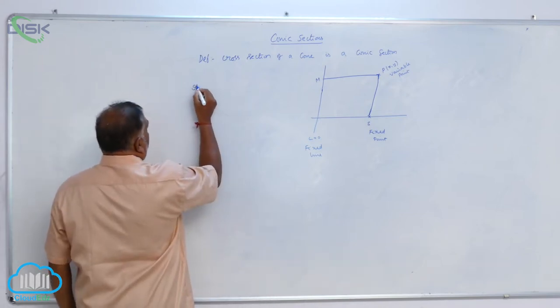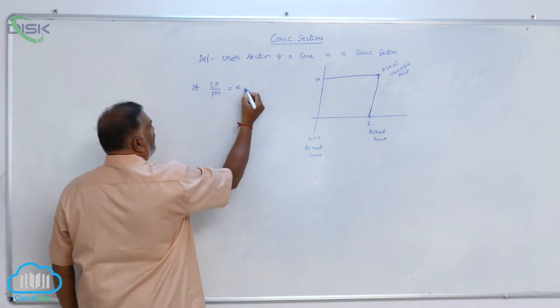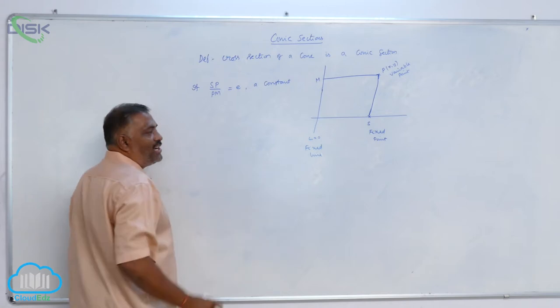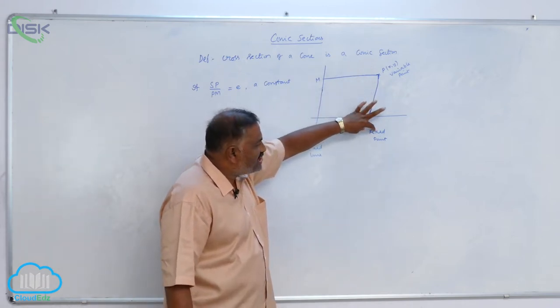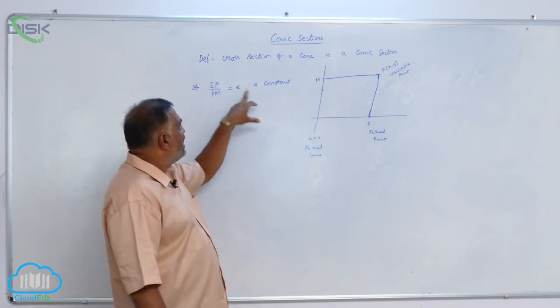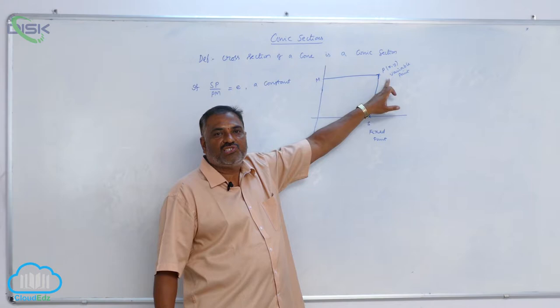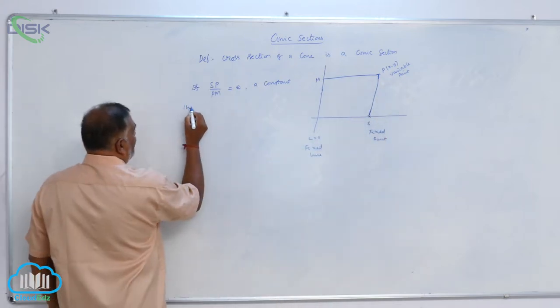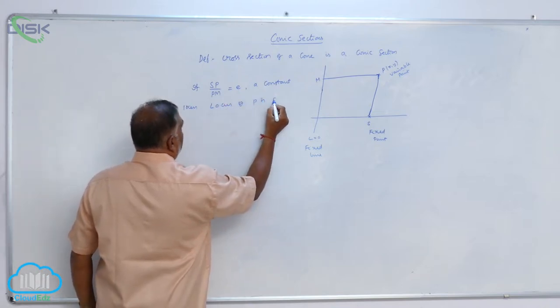Now, if SP by PM is equal to E, a constant, that means the ratio of distances from a fixed point and fixed line is a constant, then collection of all such points P, that is locus of P, then locus of P is a conic.